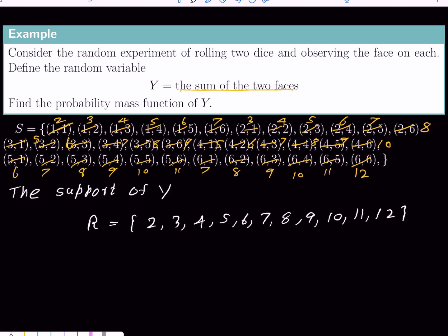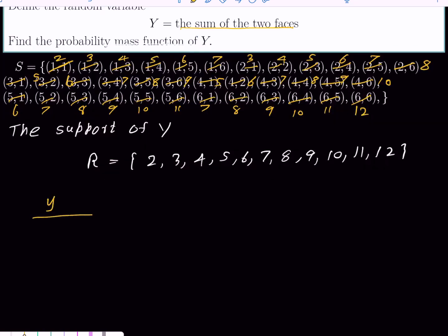Now, how do we find the probability mass function of Y? First, let me find the probability mass function of Y in tabular form. Y values and probability of Y. Y values are 2, 3, 4, 5, 6, 7, 8, 9, 10, 11, 12.